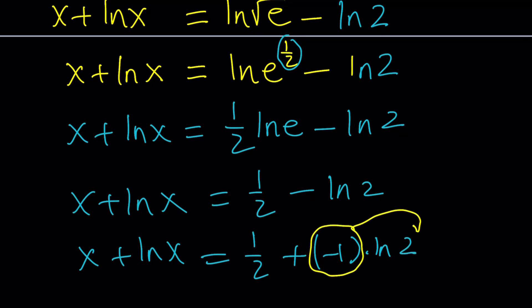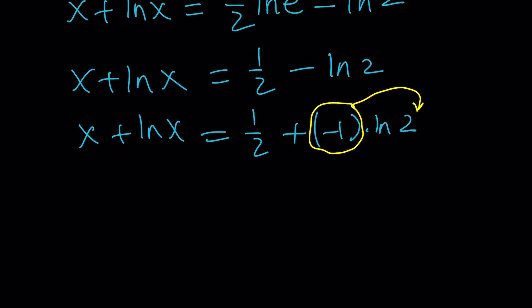What we're going to do next is move this power back. Obviously those properties work both ways as long as we stay within the domain. So now we have x plus ln x equals one-half plus ln 2 to the power negative one which is just ln one-half.